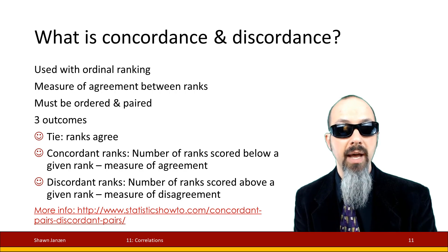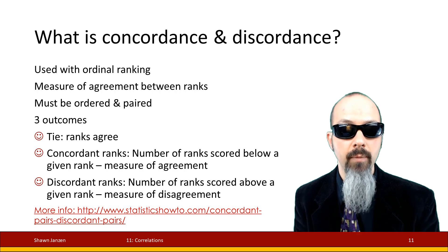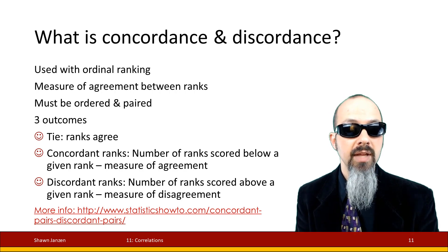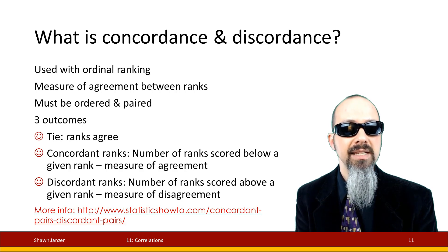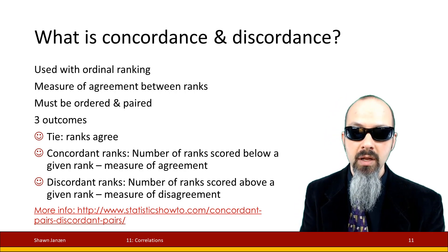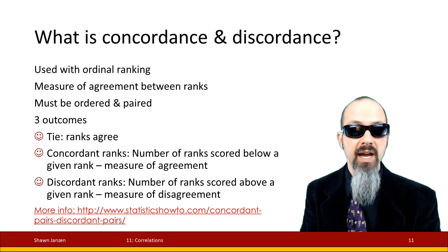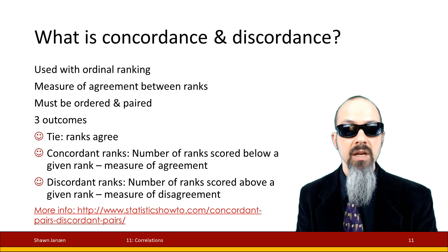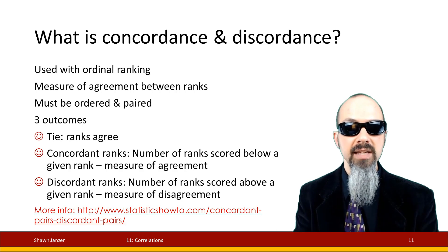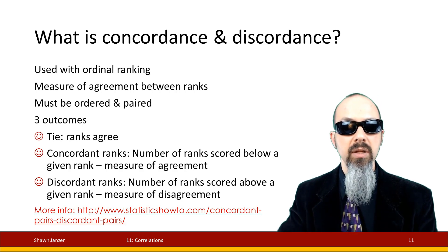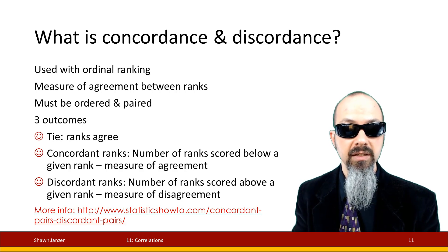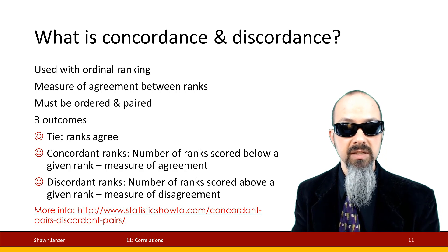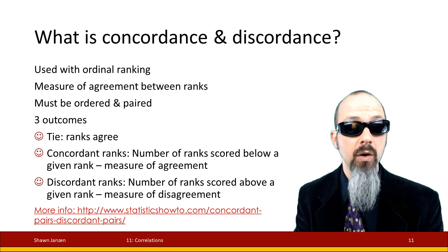The formula for tau is concordance minus discordance in the numerator, divided by concordance plus discordance in the denominator. Concordance and discordance are used with ordinal ranking, talking about the agreement and disagreement between the ranks. For this to work, one of the columns has to be in its exact order and the other matches against it — set by pairs. We have three potential outcomes: tied ranks within a column, concordant pairs, and discordant pairs. Concordance: how many ranks below a particular rank also score below it (agreement). Discordance: how many ranks below a value scored above it (disagreement).